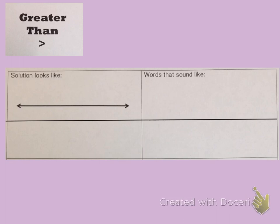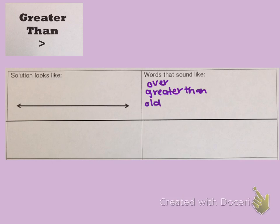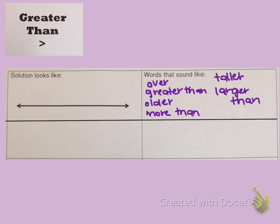Before we get to the examples, let's look at some words that indicate greater than in a word problem. 'Over' indicates greater than, obviously 'greater than' means greater than, 'older,' 'more than,' 'taller,' and 'larger than' are some examples of words that indicate a greater than inequality. Obviously these are not all the words you'll ever see, but as we find them as we work, we'll add them to our list.